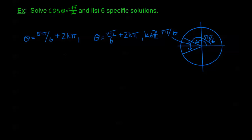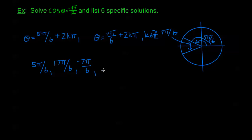Now we need to list six specific solutions. From the first general solution, we have 5 pi over 6. Adding 2 pi — that is, 12 pi over 6 — gives 17 pi over 6. Subtracting 12 pi over 6 gives negative 7 pi over 6. From the second general solution, the particular solution is 7 pi over 6. Adding 12 pi over 6 gives 19 pi over 6. Subtracting 12 pi over 6 gives negative 5 pi over 6. So we've listed six solutions and we're done.